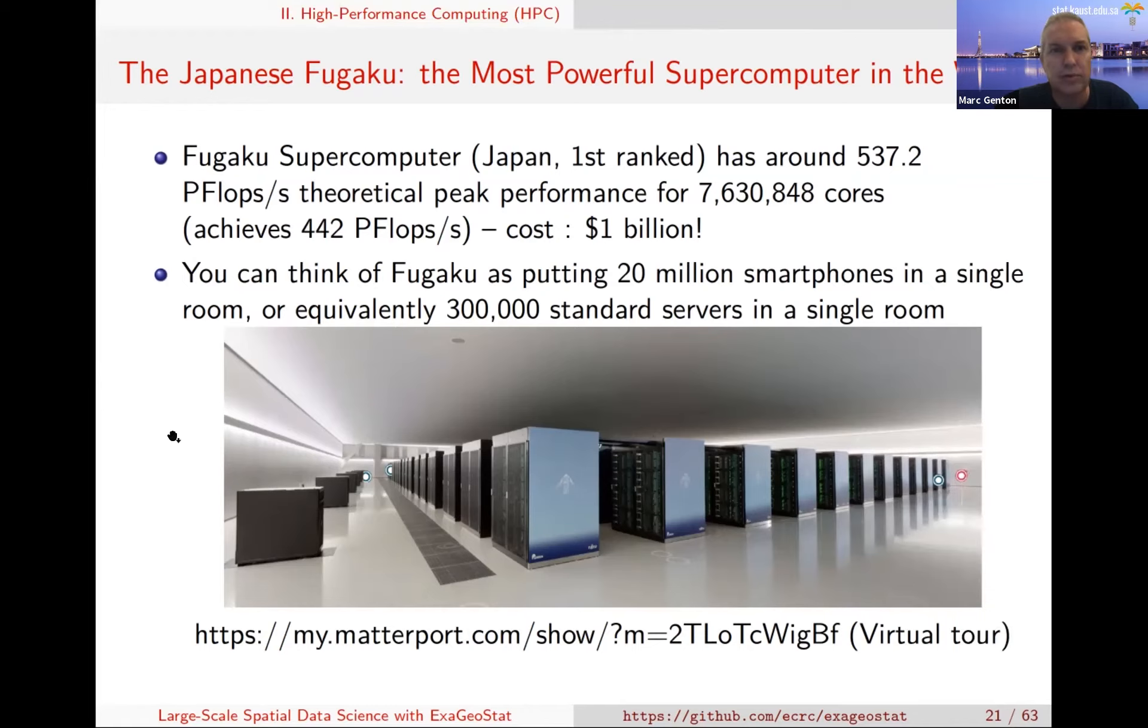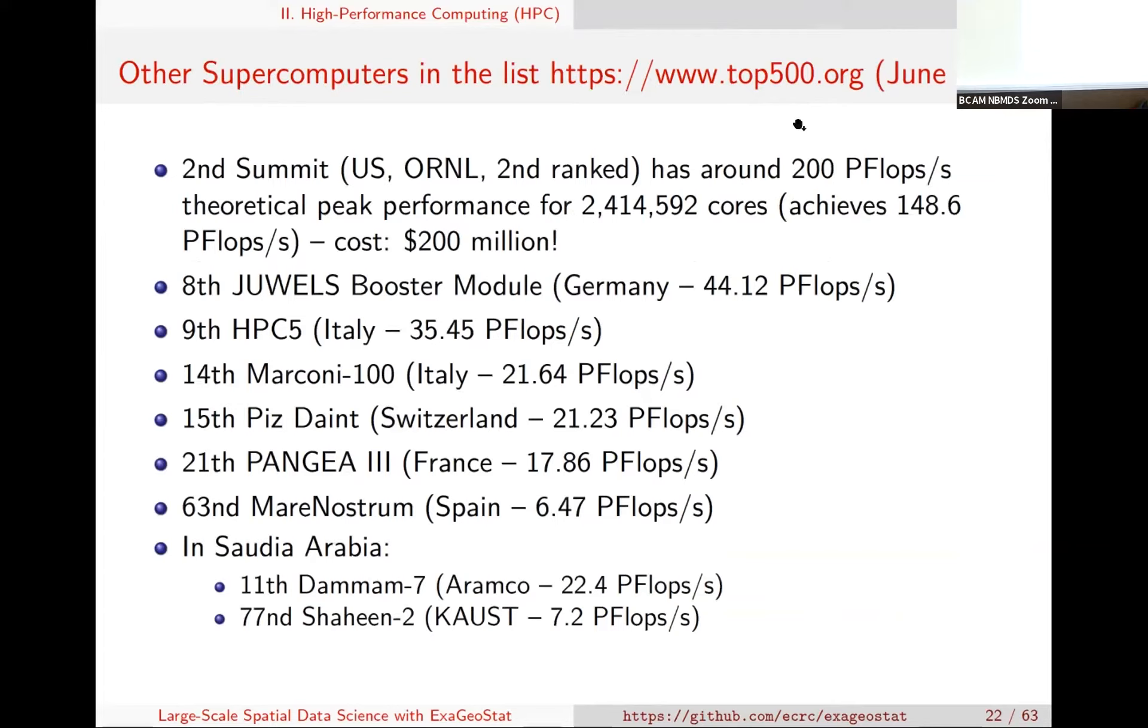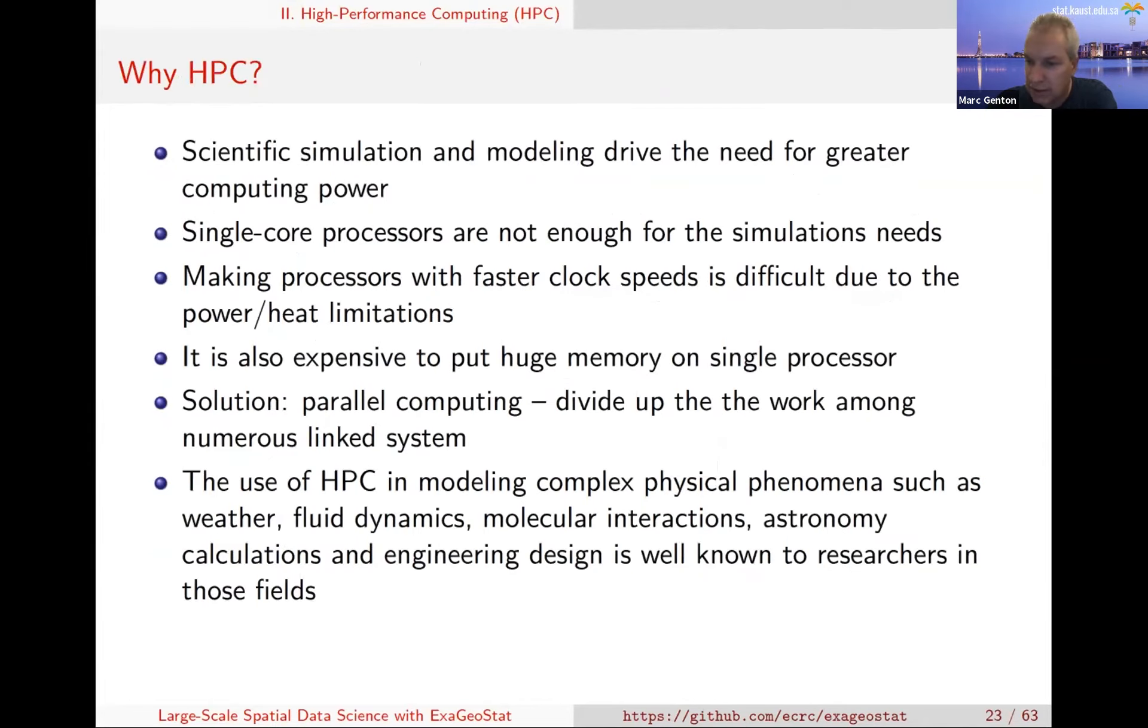There are many other supercomputers. The latest top 500 list is from June of this year. The second is Summit at ORNL. I listed a couple from Europe, including one in Spain, Mare Nostrum, ranked 63rd. In Saudi Arabia at Kaust, we have Shaheen 2 ranked number 77. Of course when it was built it was in the top 10, but those fade out very quickly. We're expecting Shaheen 3 to come sometime next year and put us back in the top 10 maybe.